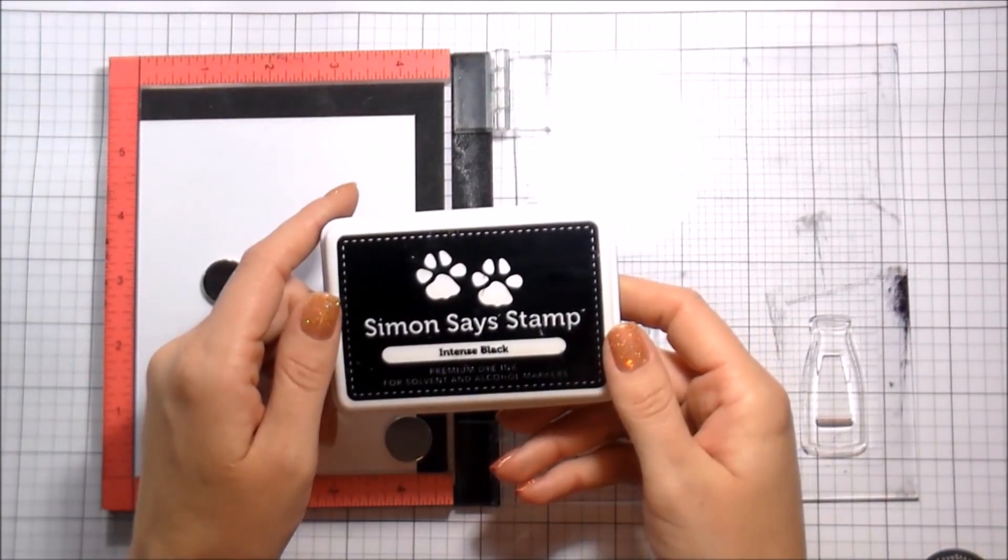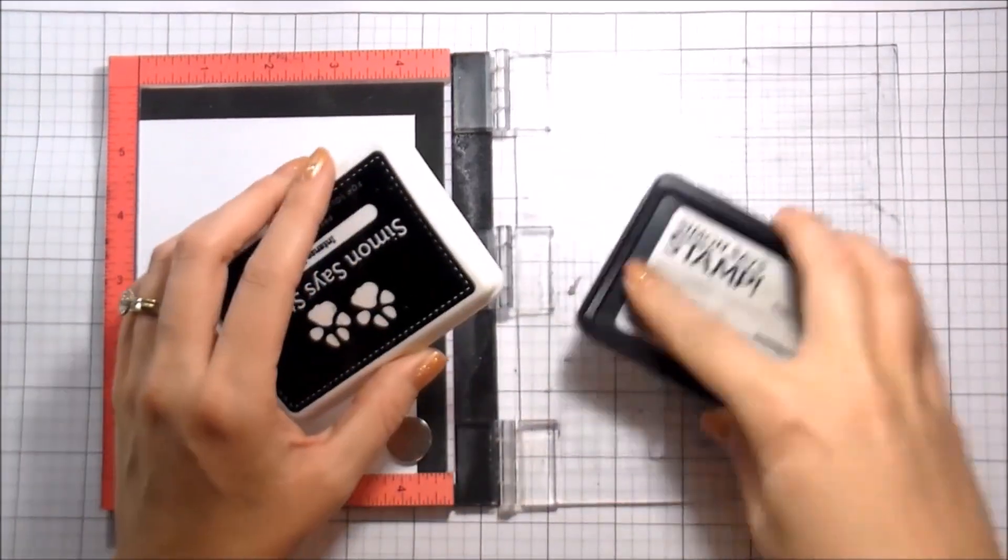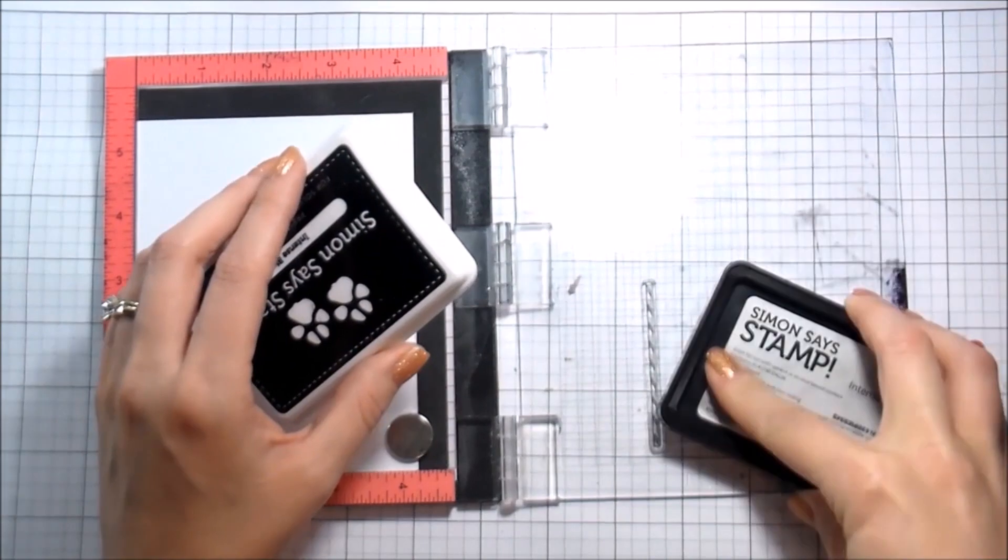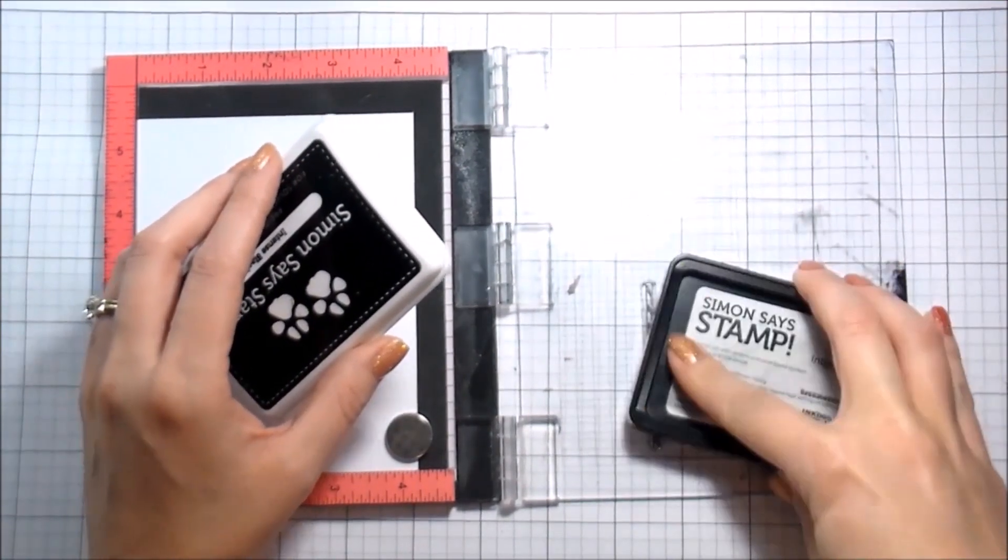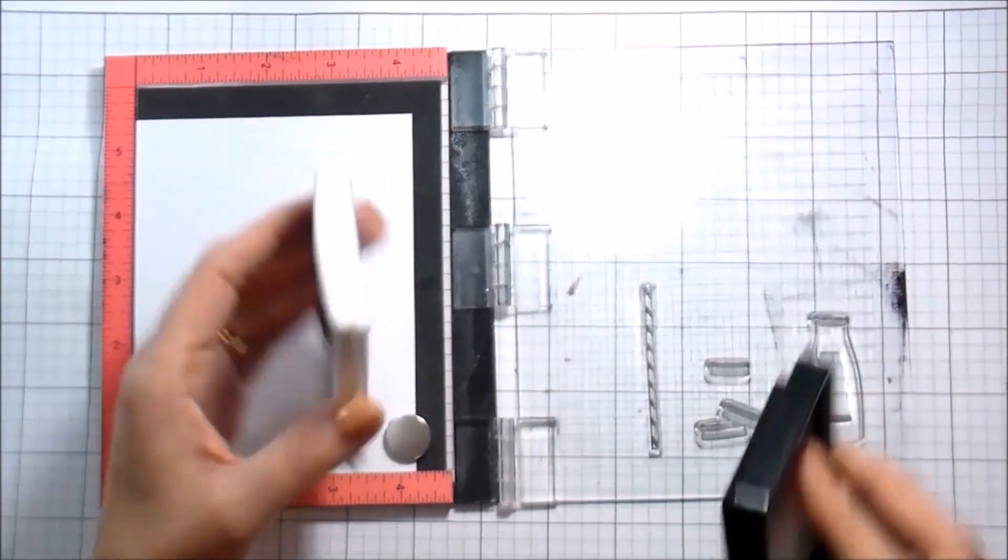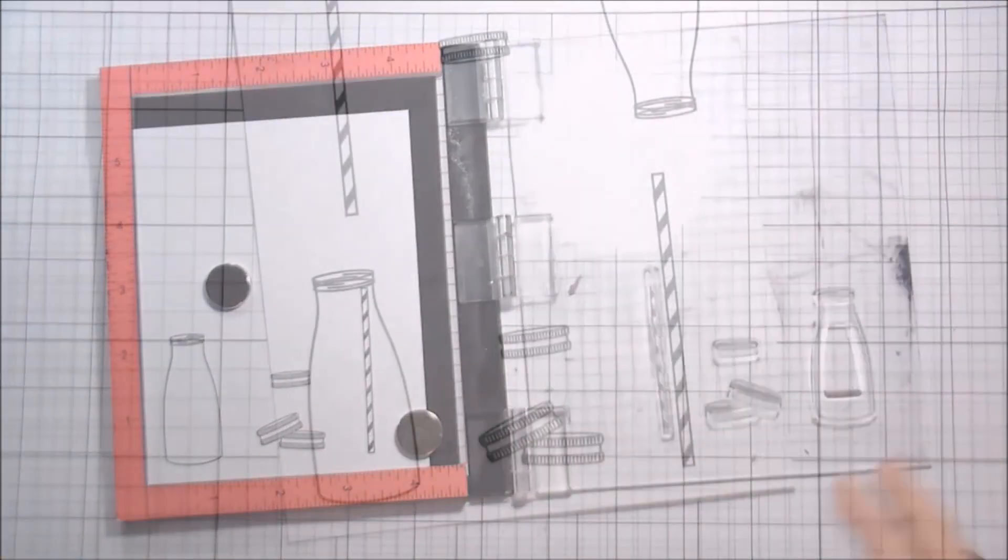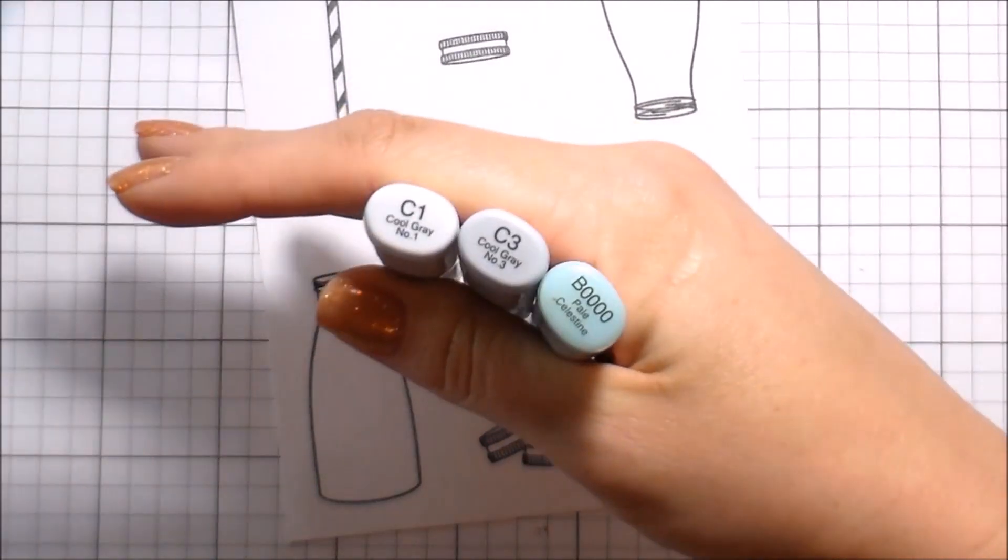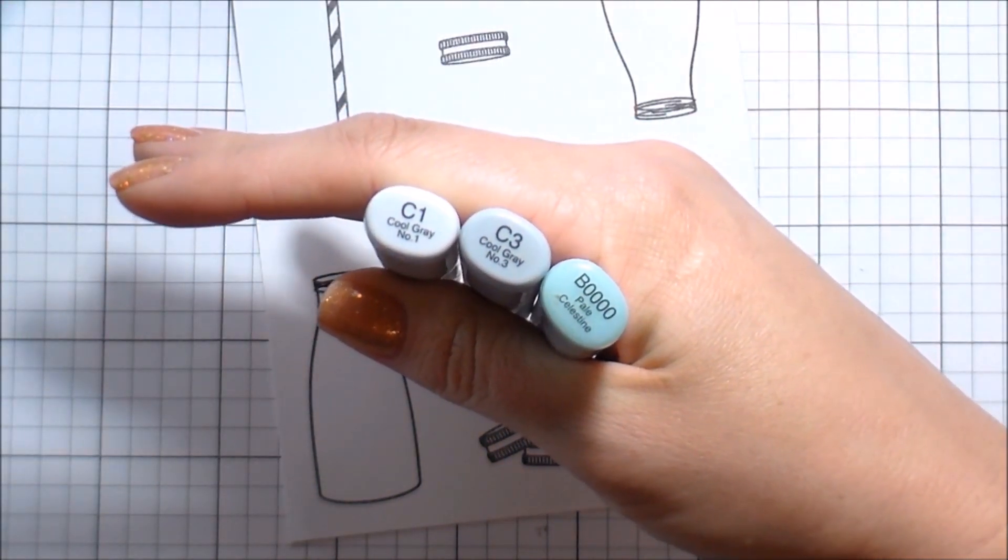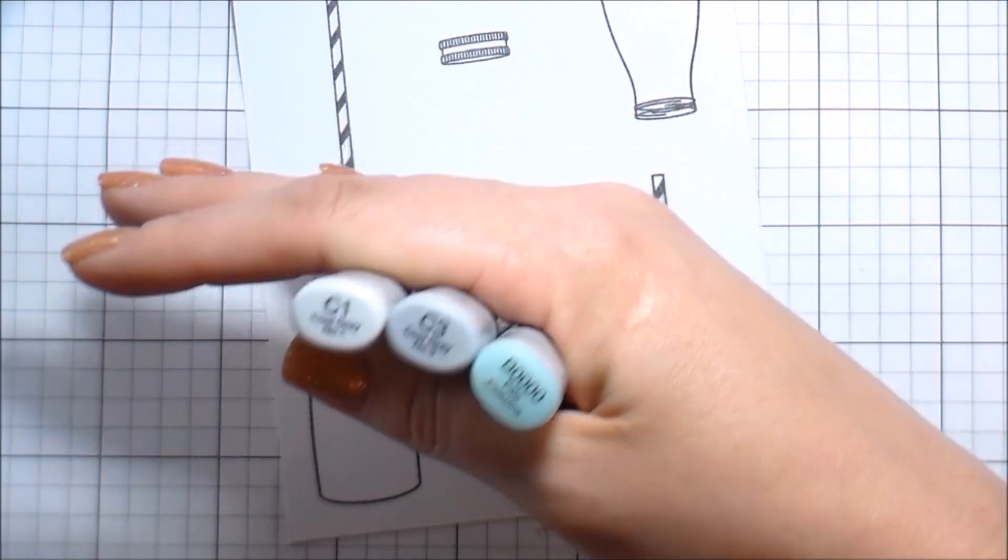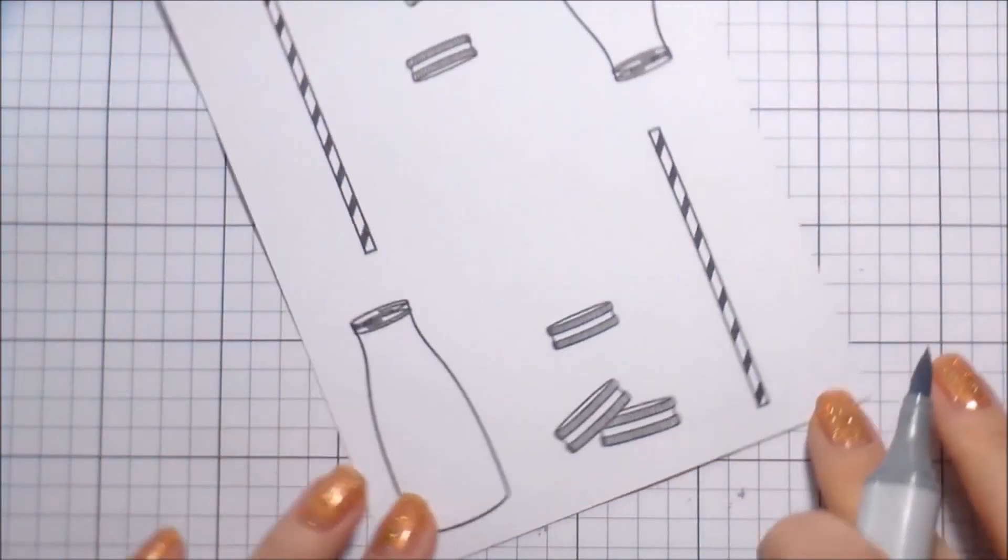I have them all blocked off on one side of my cardstock so I can just stamp them down. I'm using intense black ink from Simon Says Stamp because I'm going to be doing Copic coloring. When I'm done stamping this side, I can just flip that piece of paper and stamp it again. I don't have to worry about moving all of those stamps.